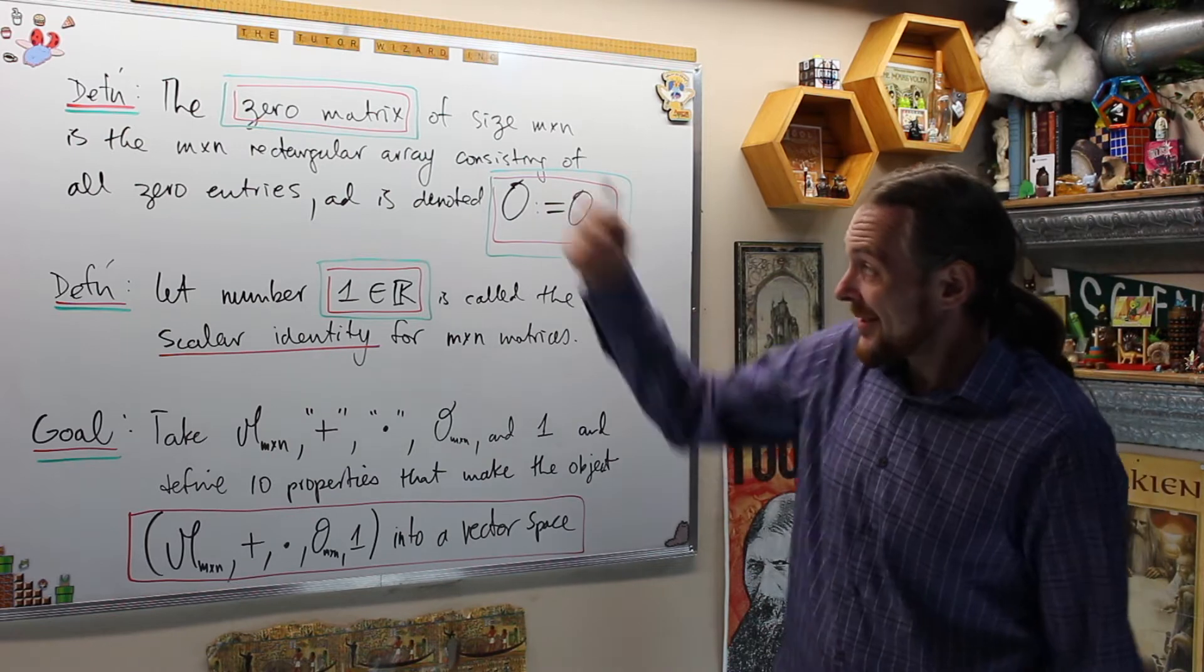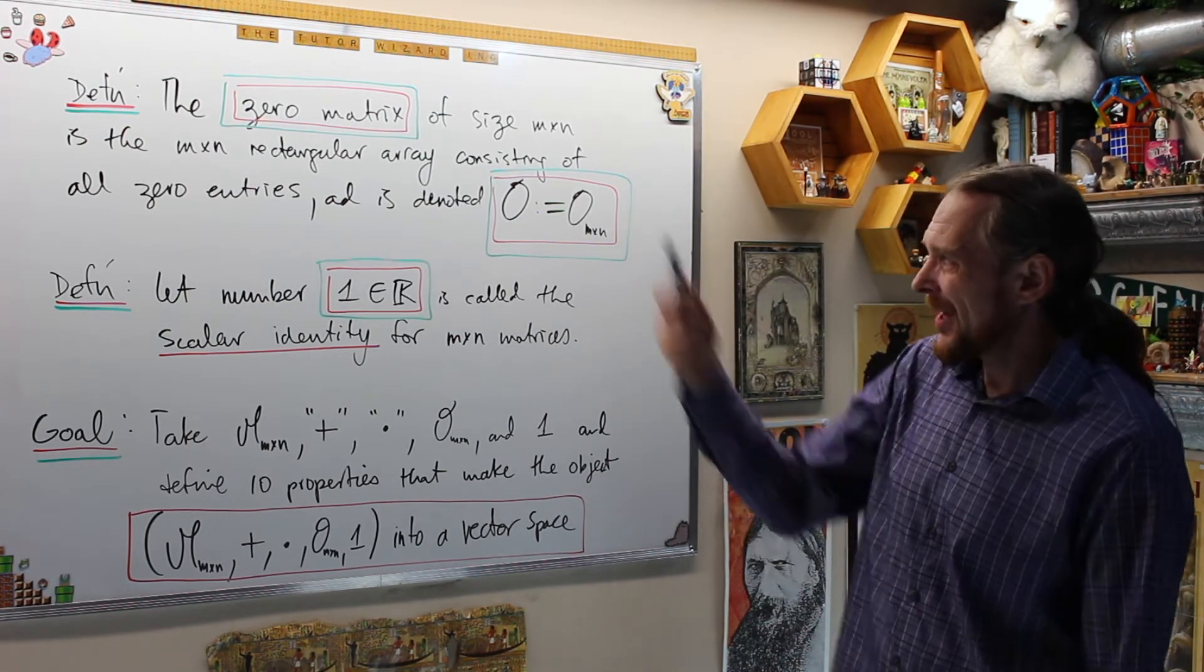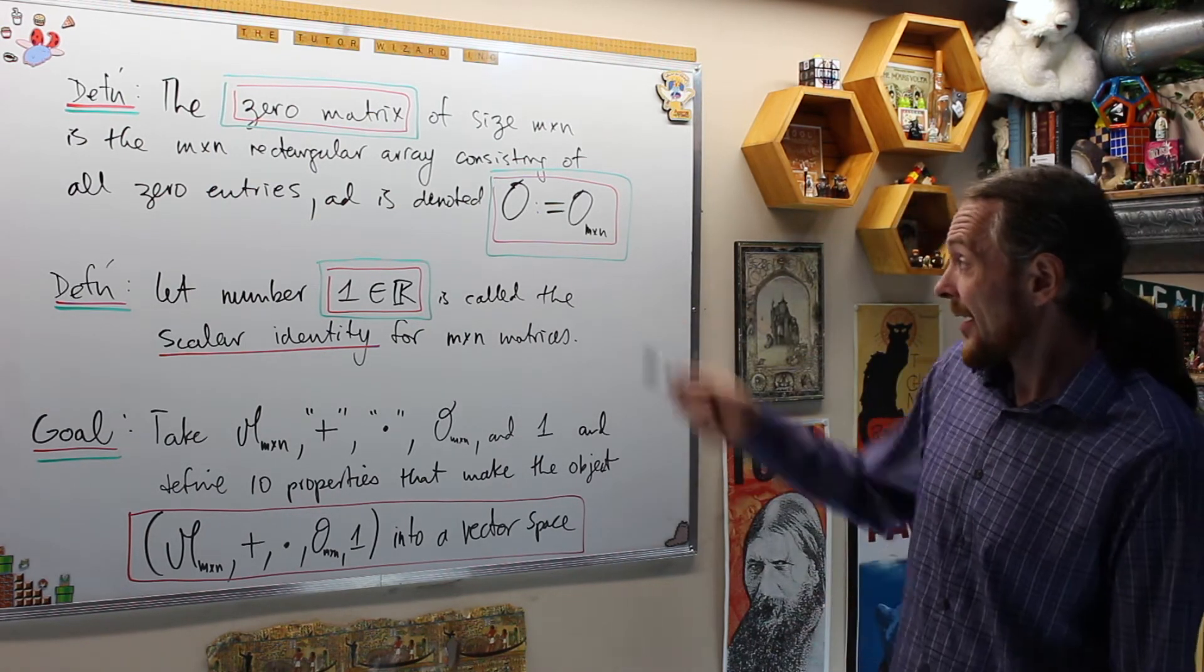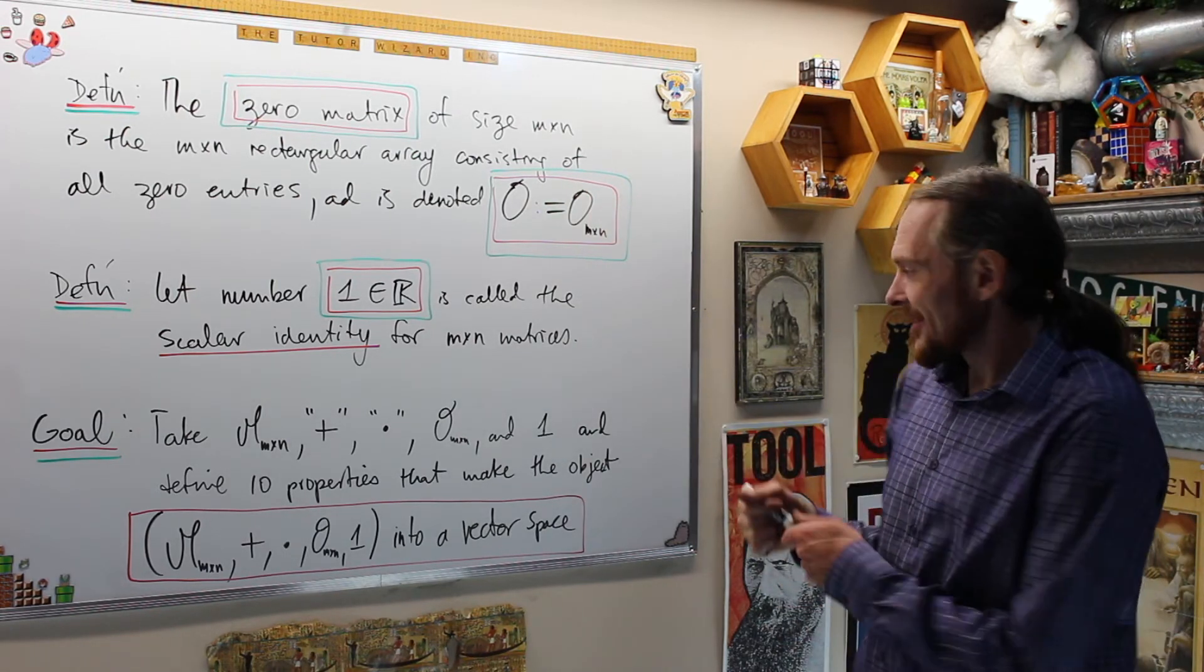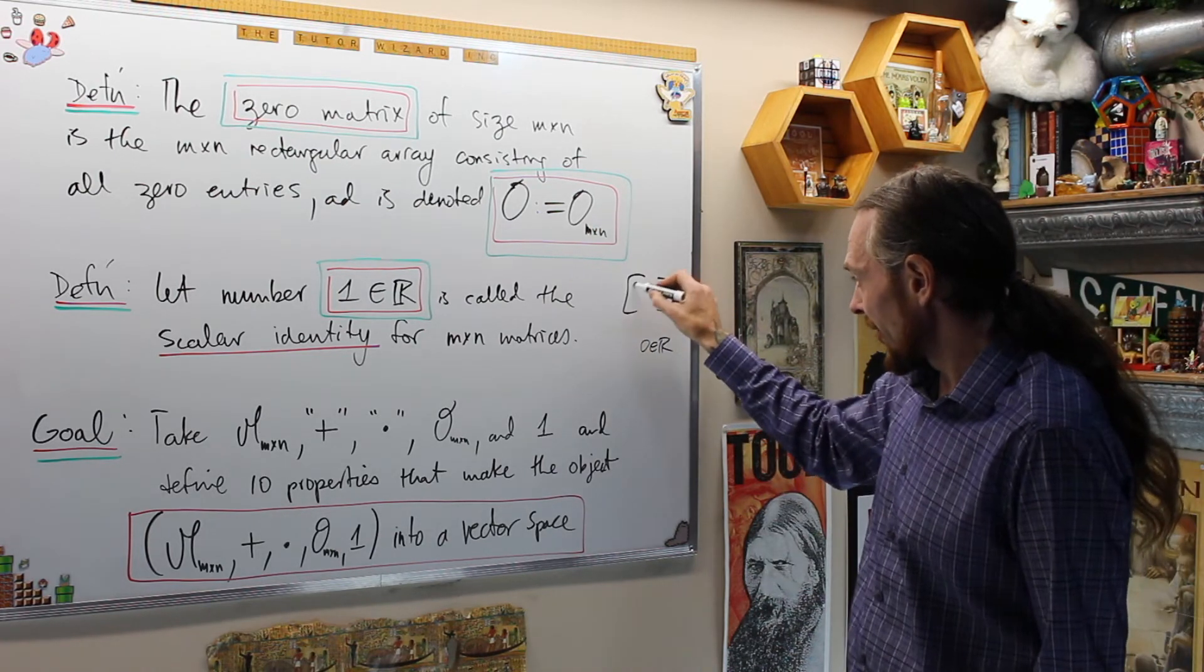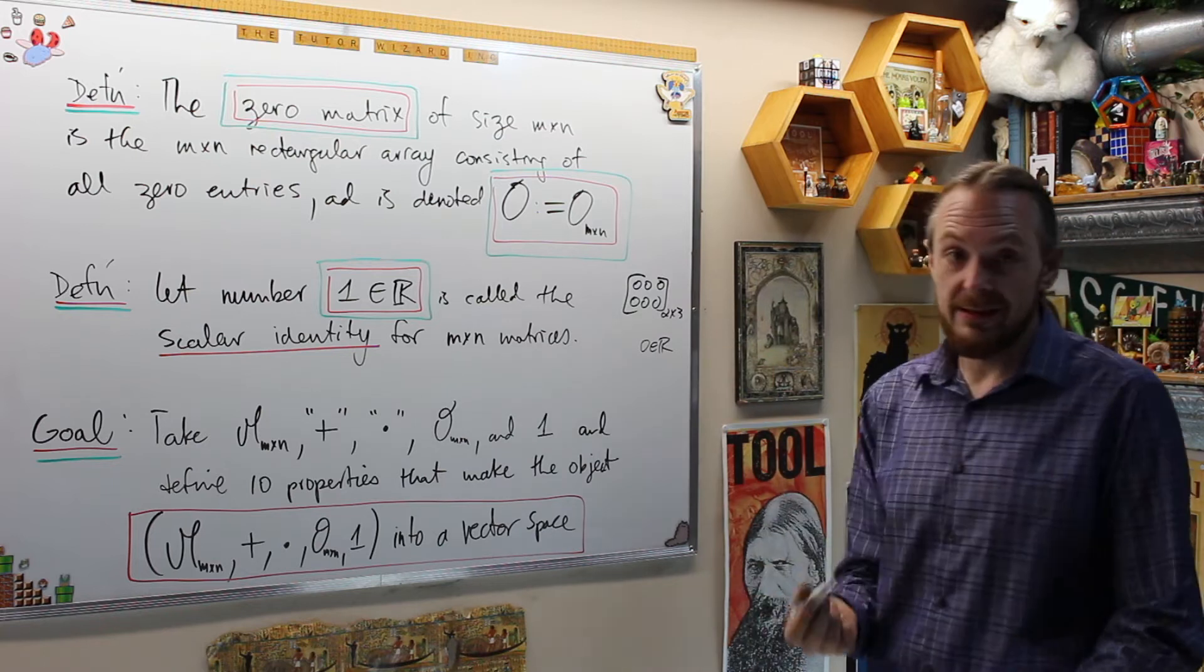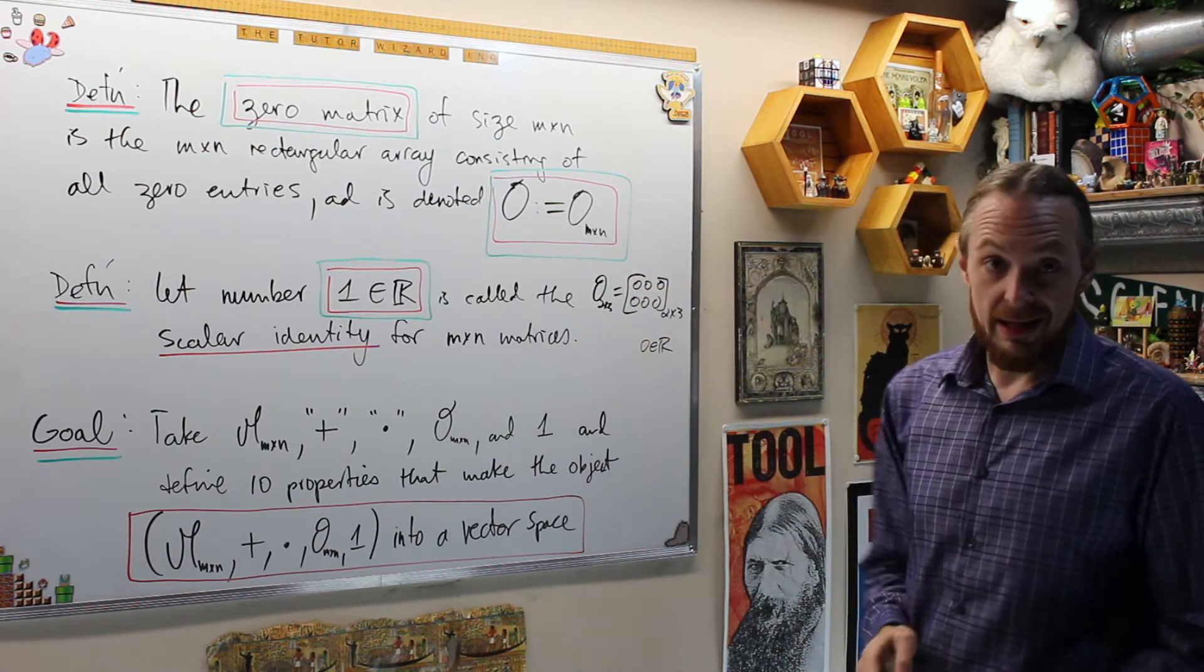Alright, now we're going to have quickly intuitive, these ones are fairly intuitive. The zero matrix of size m by n is the m by n rectangular array consisting of all zeros. And we're going to denote it by 0 or 0_{m×n}. We want a slightly different notation because it's not the number 0, which is just a real number. This is the matrix which is an array of a bunch of zeros. That's the 2×3 zero matrix. So that's 0_{2×3}. That's what we mean by that.